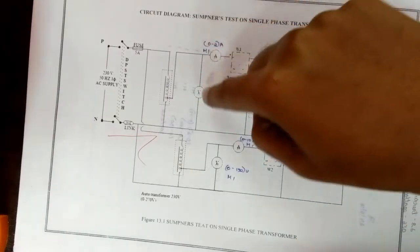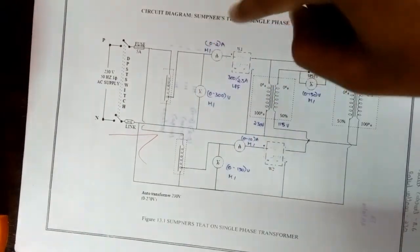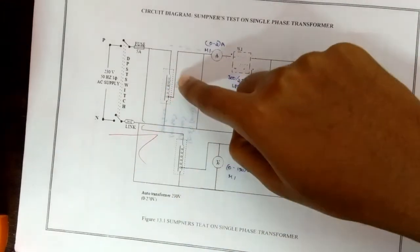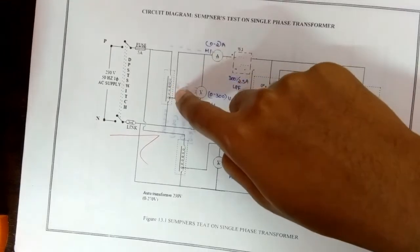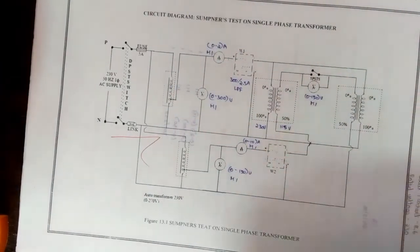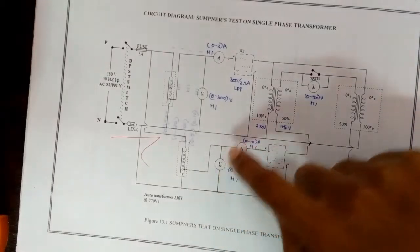All the meter readings on the primary side as voltmeter, ammeter, wattmeter are noted down. The autotransformer is adjusted to get the rated current in the secondary ammeter.